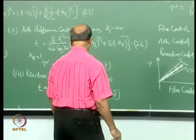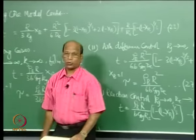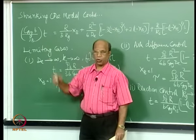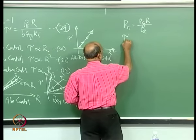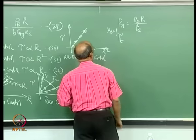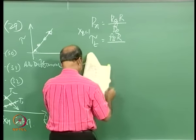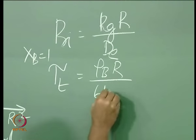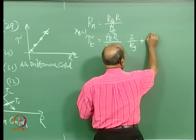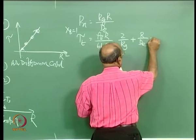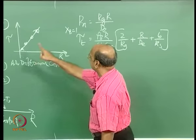When all three steps are controlling simultaneously, for X_B equal to 1 the total time tau is given by: tau = (rho_B * R) / (B * C_AG) * [2/(K_G) + R/(D_E * 6) + 1/(K_S)]. This is equation 30.